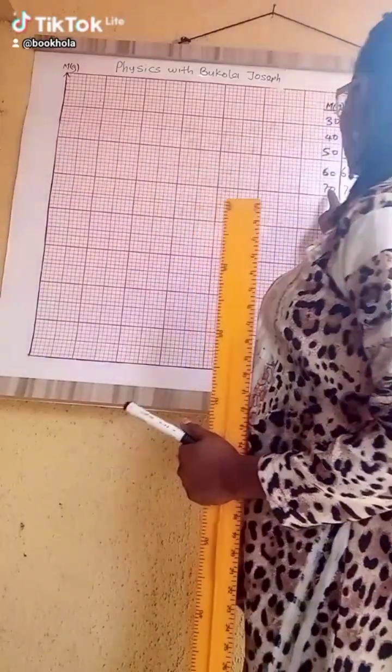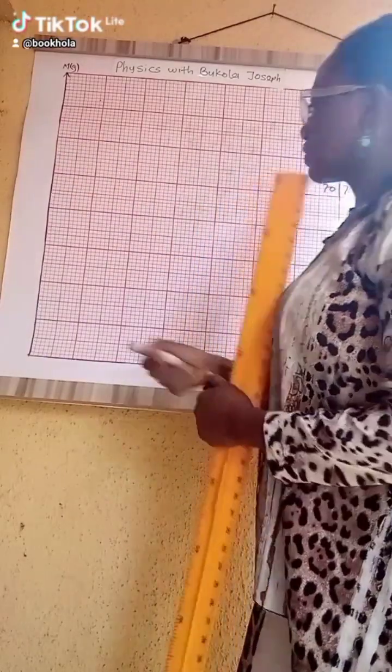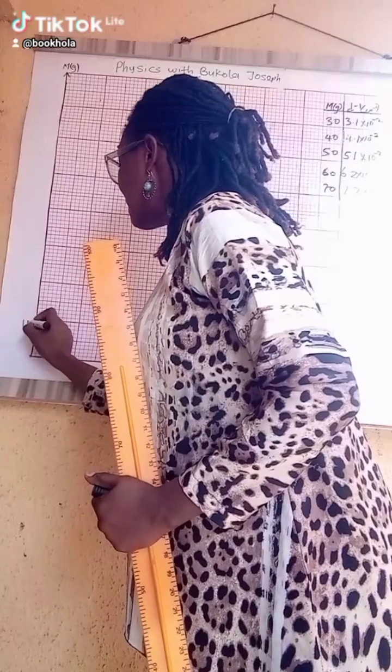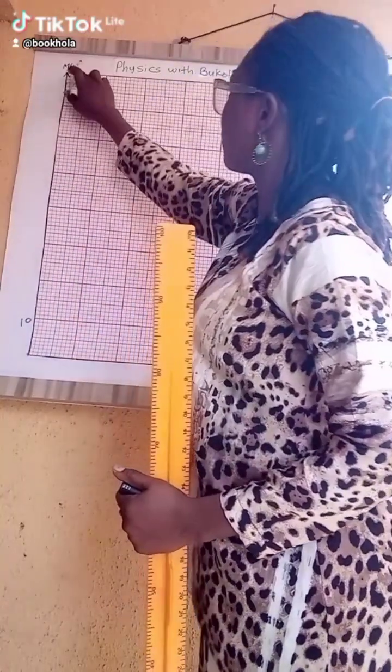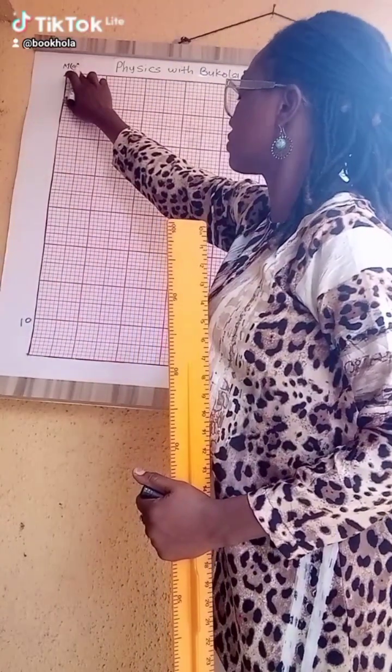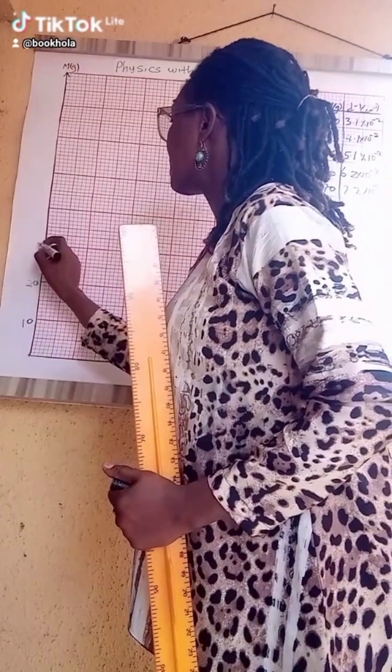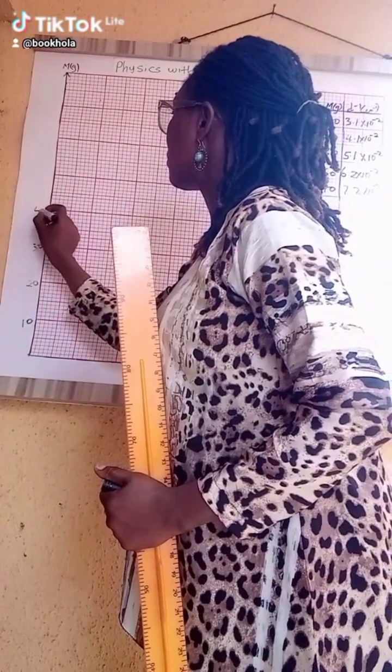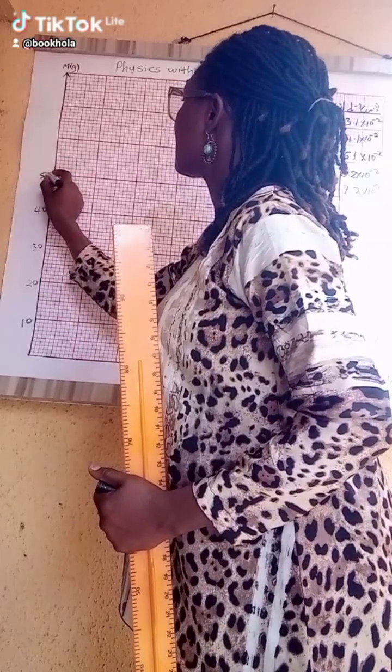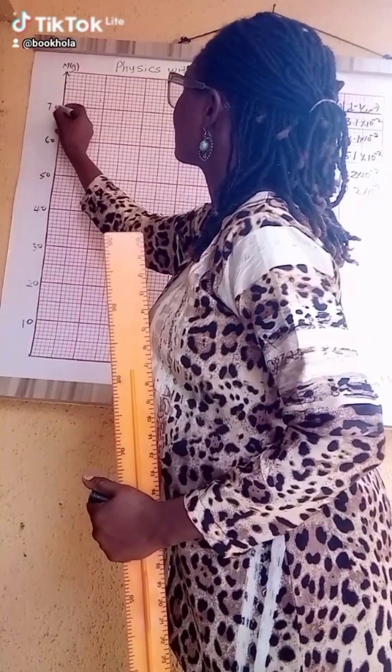50, 60, 70... I think this is 70, okay. So we'll do this: 10. Remember, we'll put the units here, so there's no need to be putting 10 grams. 20, 30, 40, 50, 60, 70.